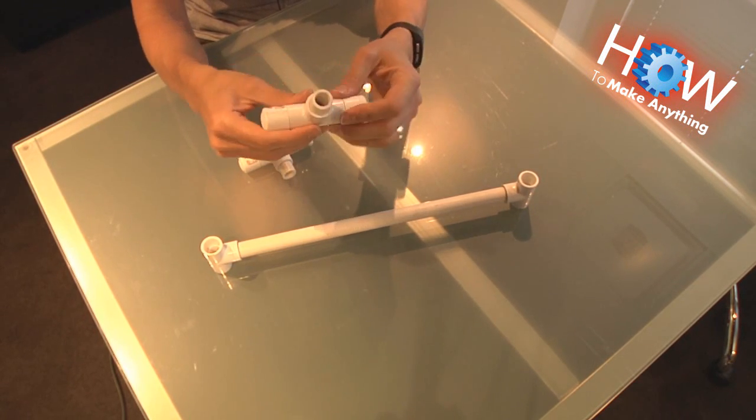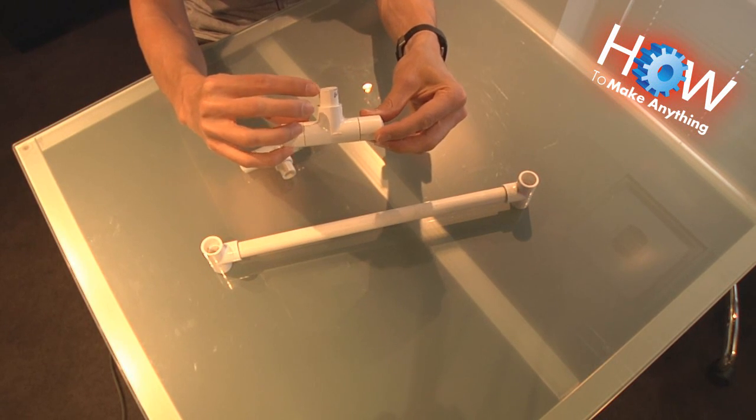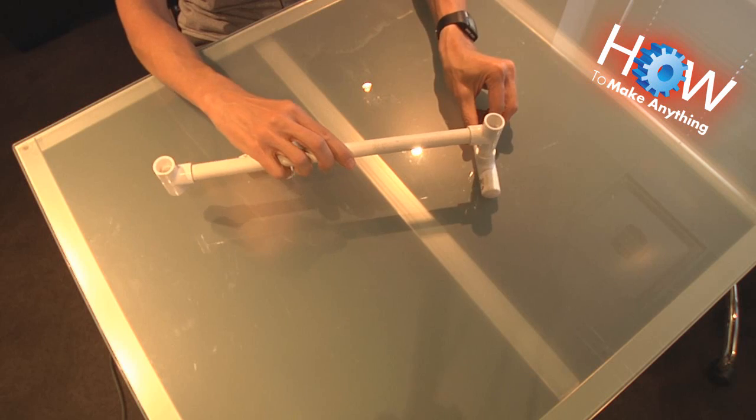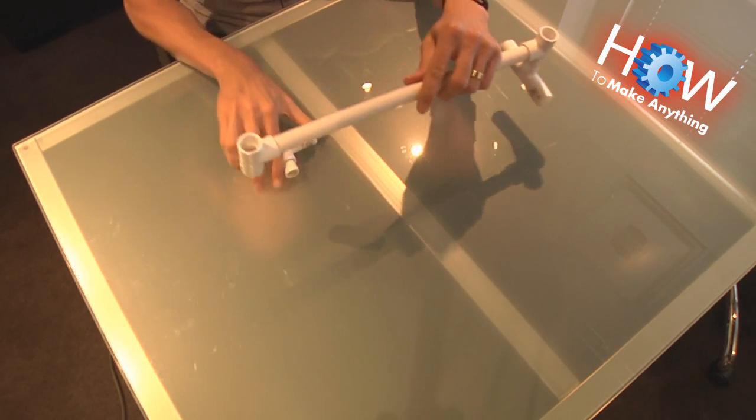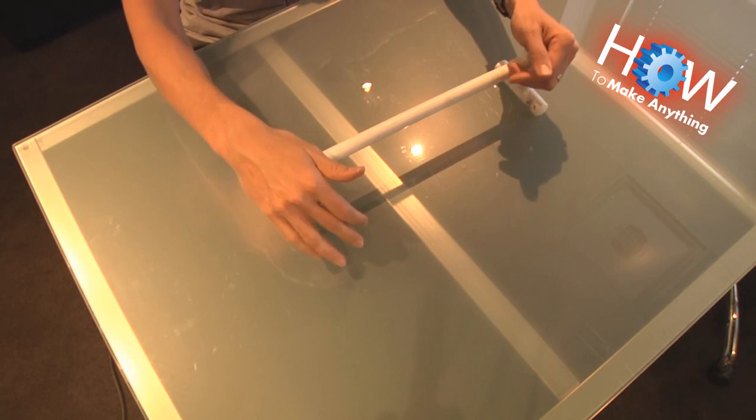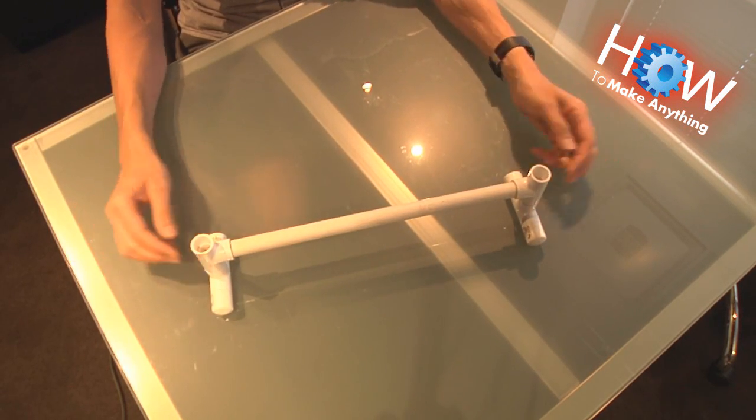Superglue those in there. Then you're going to want another insert sticking up like that. That'll go into the bottom of your base. You can superglue that into the bottom, like so, on each end. This is going to form the feet that will hold the entire thing up when you sit it on the ground.